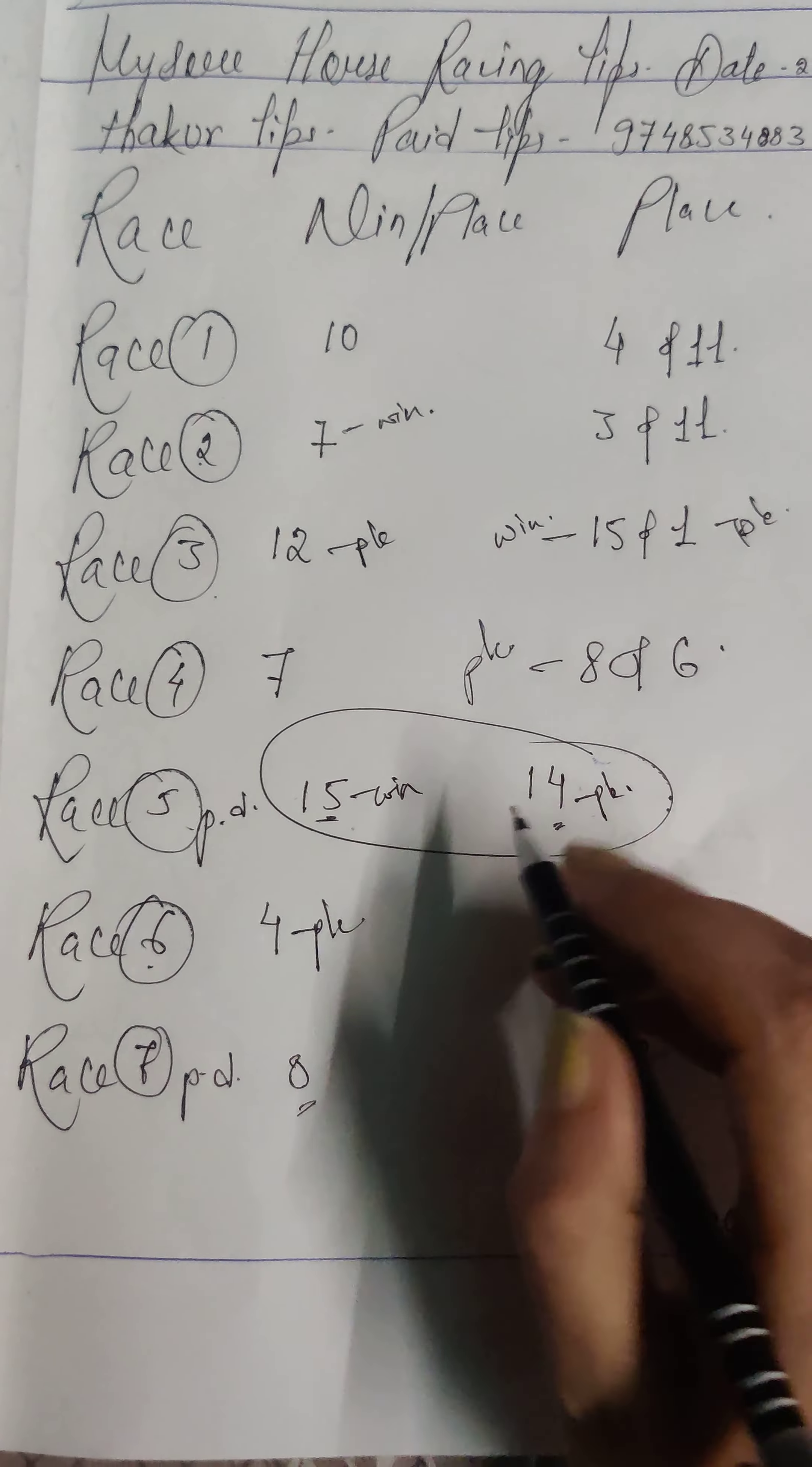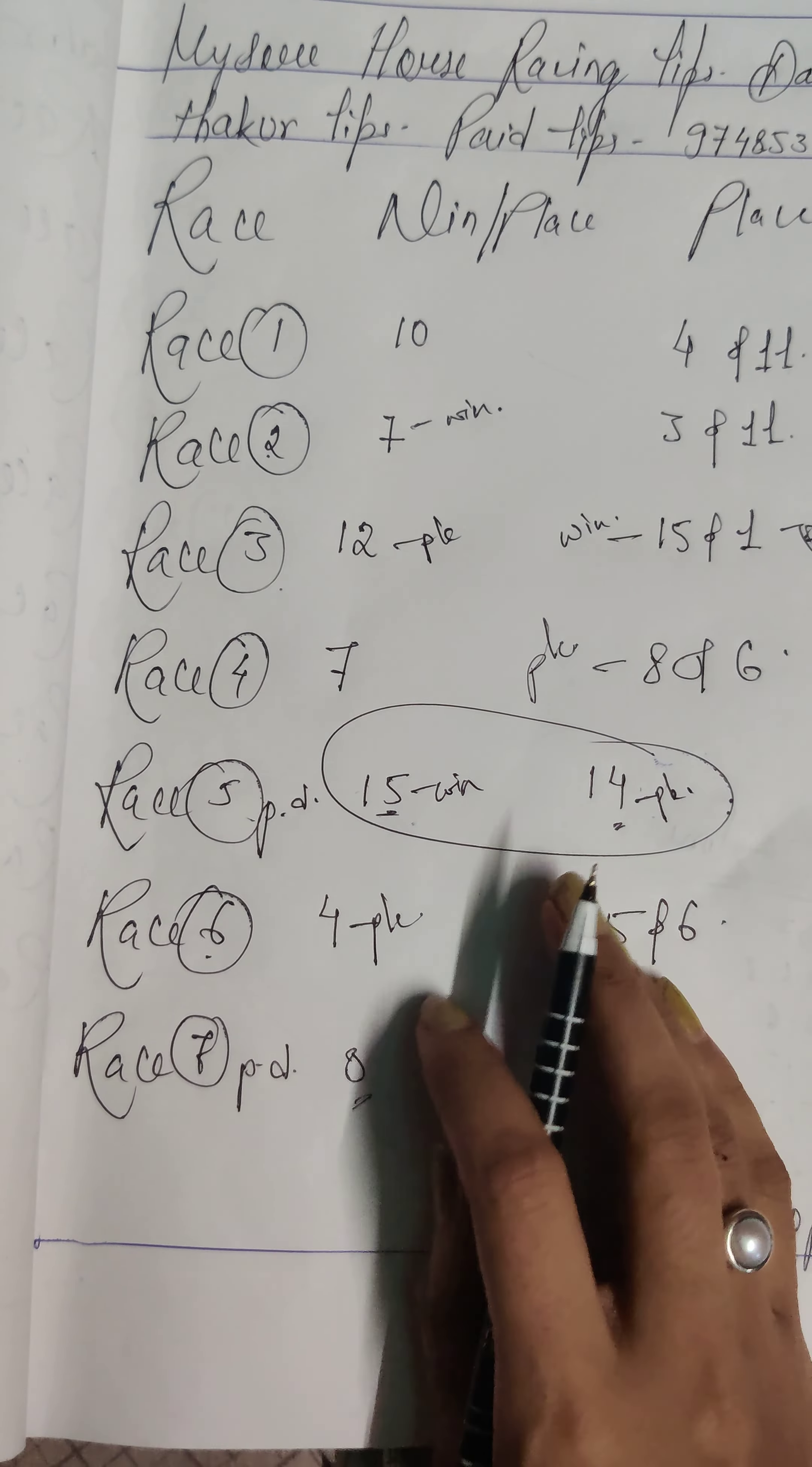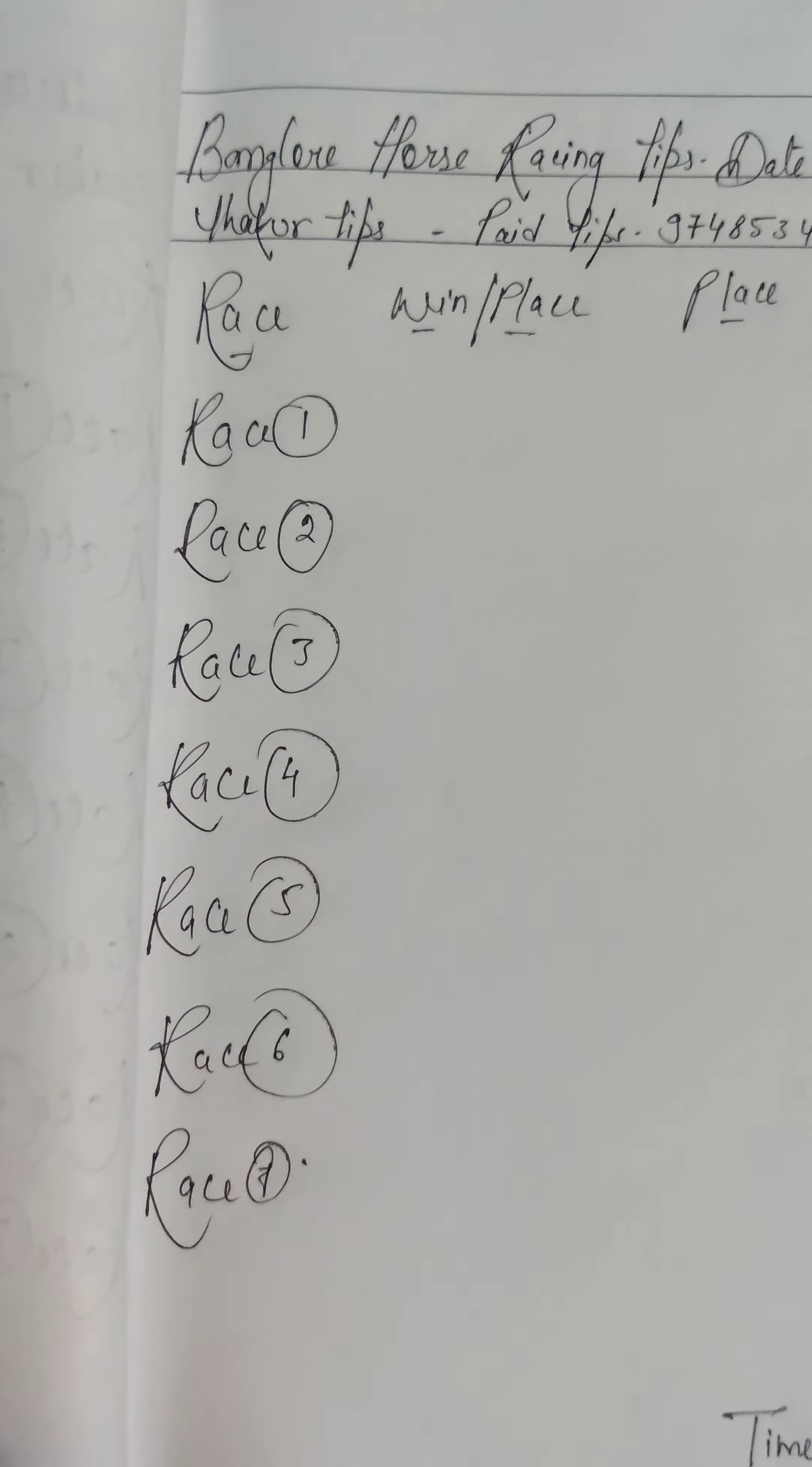In the sixth round I got 4-5-6. So we got 4th place. If you follow this line, we got 4-2 in the seventh round, we got 8-4-2.